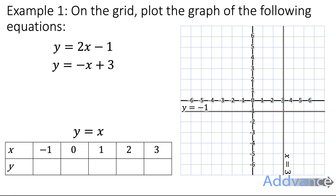Now for the rest of the equations, we're going to use a table of values. The table of values looks like this down here — we've got the x's and the y values. For y equals x, that's really simple. All the y-coordinates are the exact same as the x-coordinates, because y is equal to x.